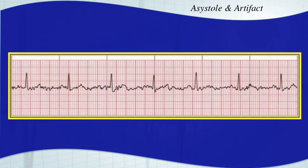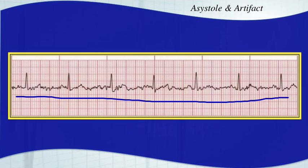Here we go with some movement — this patient looks to be shivering. You've completely lost your baseline, and it's very hard to identify your P-waves, which makes it difficult to identify if there's some sort of arrhythmia going on. You're going to want to try to provide the patient with a blanket, keep them warm, and eliminate that shivering.